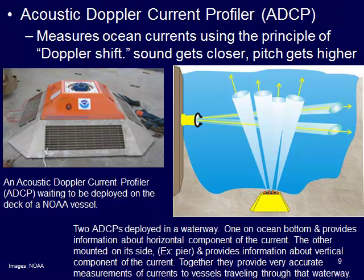We can also use acoustic Doppler current profilers. This orange device gets mounted onto the ocean floor bedrock and measures the Doppler shift — instruments mounted on the ocean floor or fixed to a solid structure like a dock shoot sound waves back and forth to measure how fast currents are moving and in what direction. It's the same idea as a train passing you: as it approaches, the pitch gets higher, and as it moves away, the pitch gets lower.